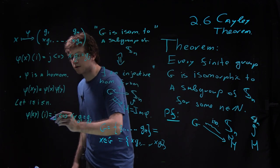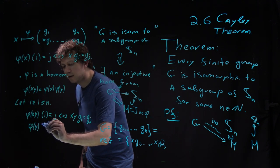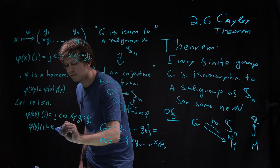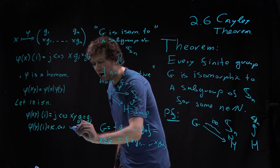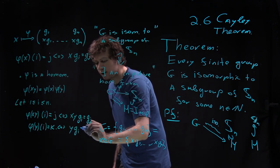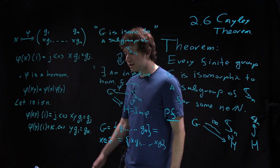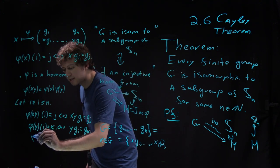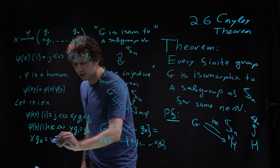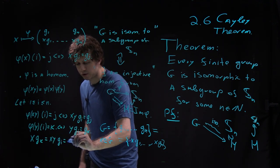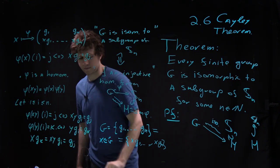Then I need to see what the other side does. So phi of Y does something to i. Let me say that it sends it to k. I don't know which k, but that will mean that Y times g_i is equal to g_k. But then I can see that X times g_k is equal to X Y times g_i is equal to g_j.